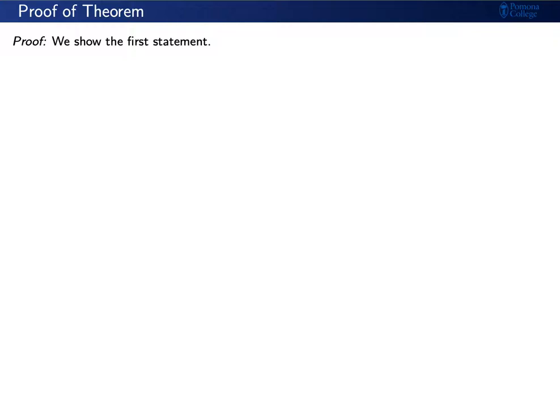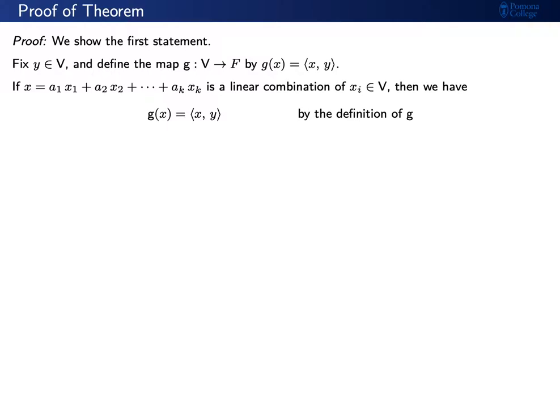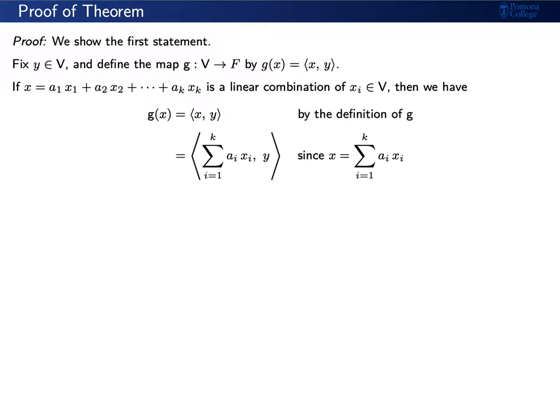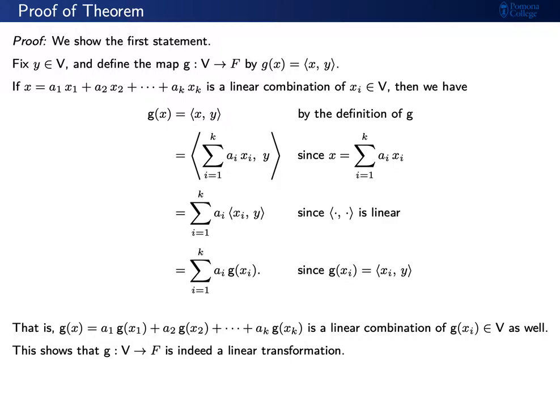Let's discuss the proof of this theorem. We'll start by showing the first statement. Let's fix a vector y in our vector space v, and define a map g from the vector space to the scalars by g of x equals the inner product of x with y. We'd like to show that this g is a linear transformation by showing that g preserves linear combinations. Let's say that x is a linear combination of vectors x_i in v. Then g of x is the inner product of x with y. We'll substitute in x as our linear combination of the x_i's. Since the inner product is linear, we can write this as a sum of inner products of x_i with y. But these inner products are just g of x_i, so g of x is a linear combination of the g of x_i's. Therefore g is indeed a linear transformation.